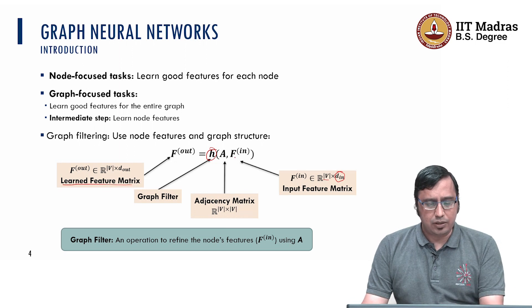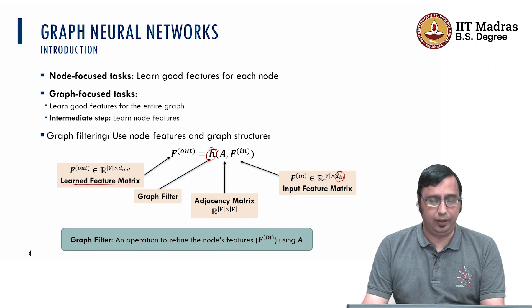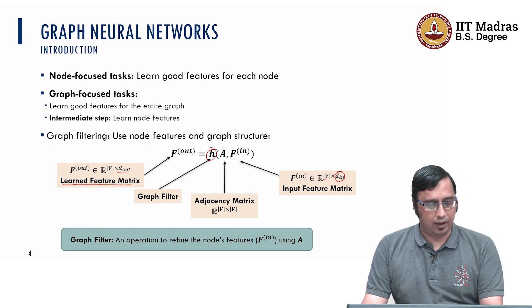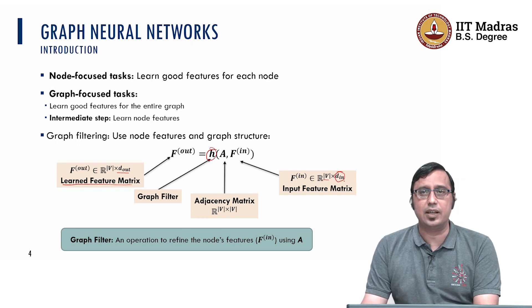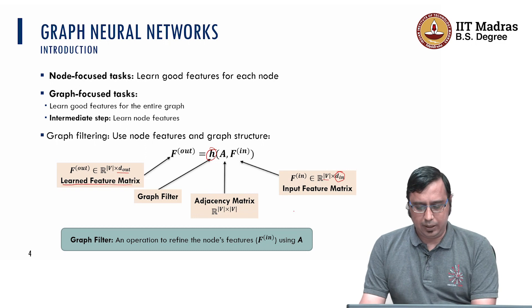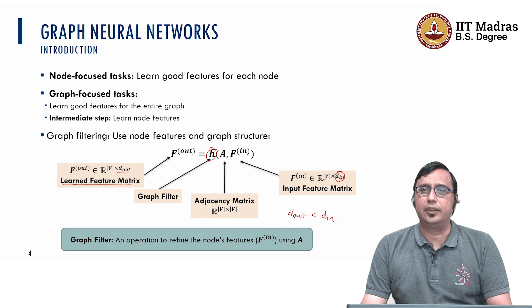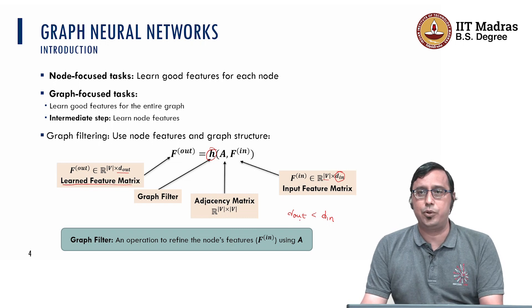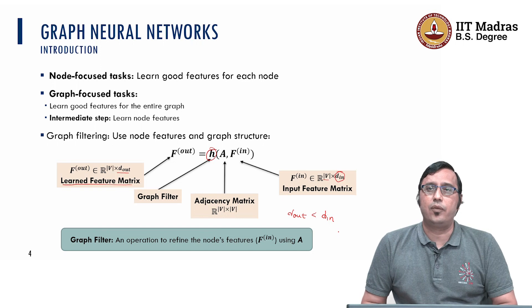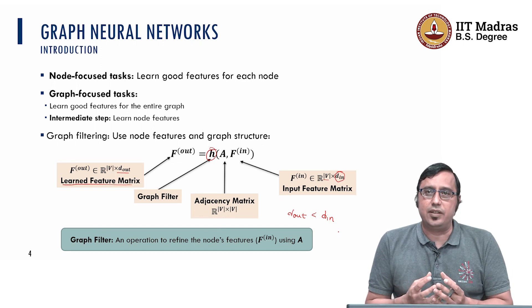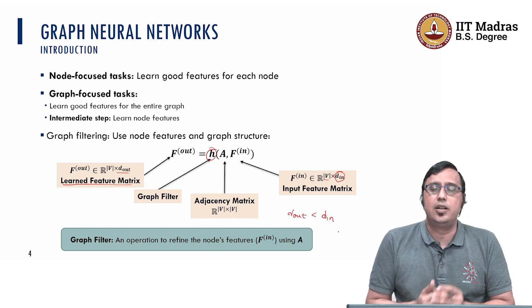What is a graph filter? It is an operation to refine the node features F_in using the structure A. Remember that we are changing F_in to F_out in terms of feature learning, and the number of output features can be different from the number of input features. Typically in any machine learning task, we want to have fewer features than we started with — so we always want d_out to be less than d_in. That is why we learn compact features which can be used for a downstream task.